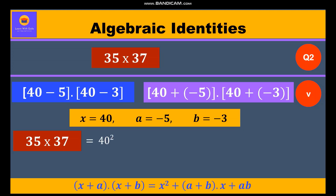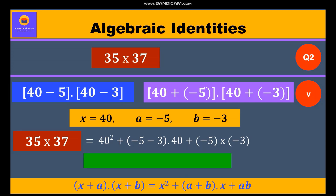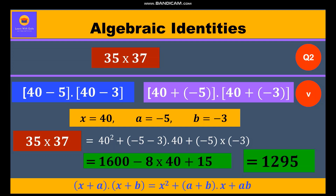We get 40 whole square plus (minus 5 + minus 3) into 40 plus (minus 5) into (minus 3). So 40 squared is 1600, minus 5 and minus 3 give minus 8, so minus 8 into 40, and minus 5 into minus 3 is plus 15. Solving all this, we get 1,295.